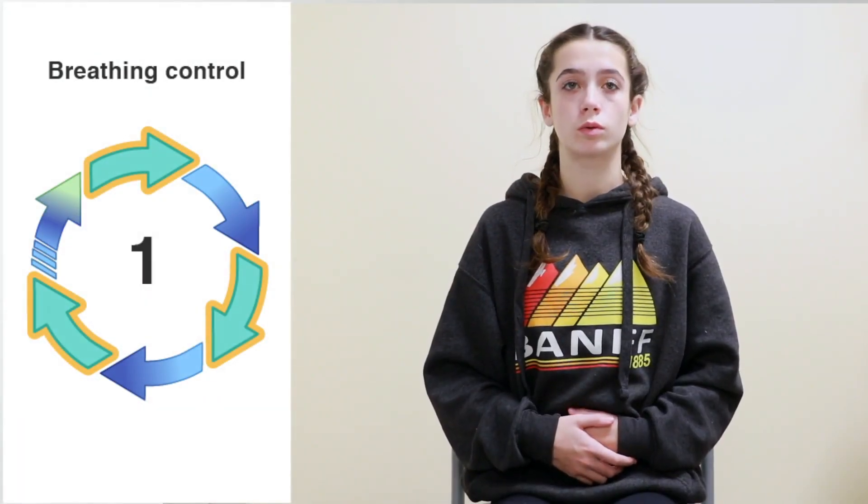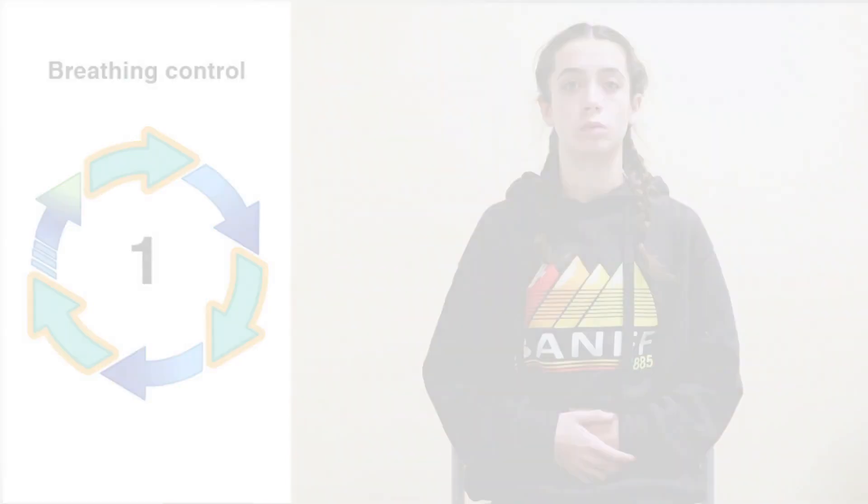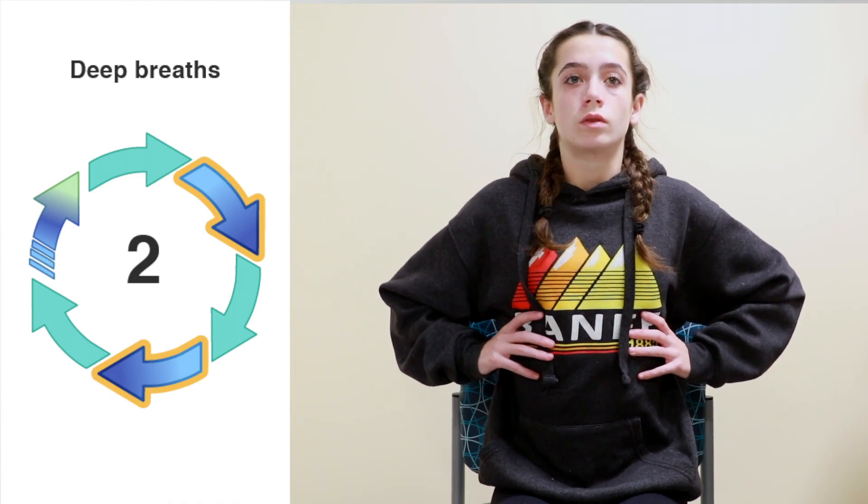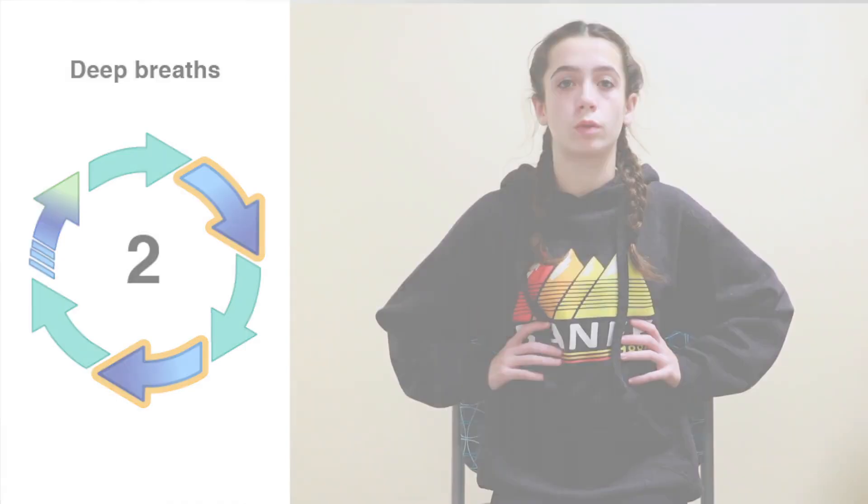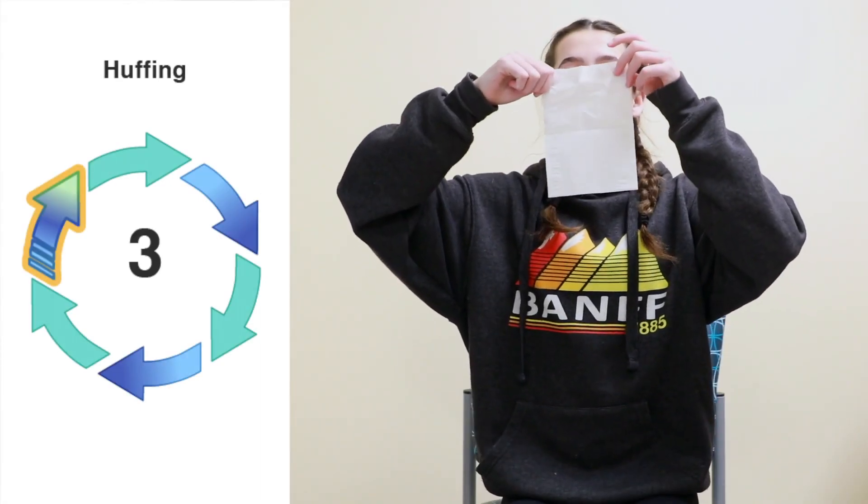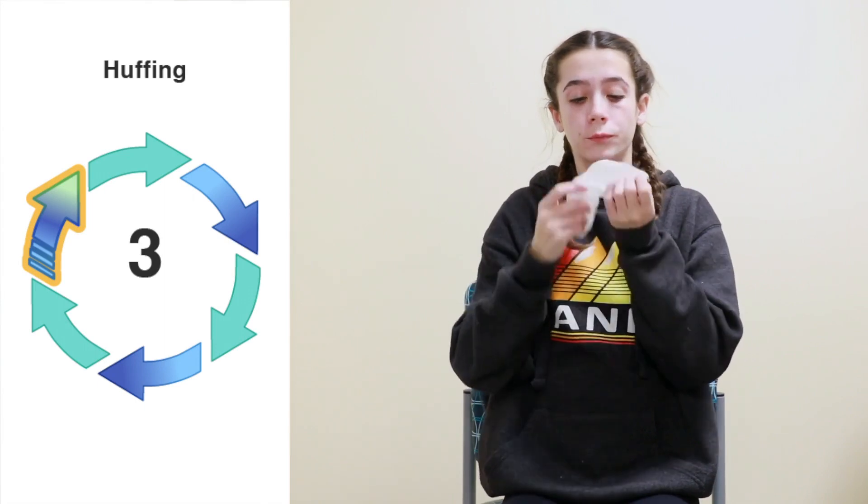Number one, breathing control using diaphragmatic breathing or belly breathing to help relax the airways. Number two, chest expansion exercises with deep breathing and breath holds to loosen the mucus. And number three, huffing to move the mucus up the bigger airways and out of the lungs. Let's see how this can be done.